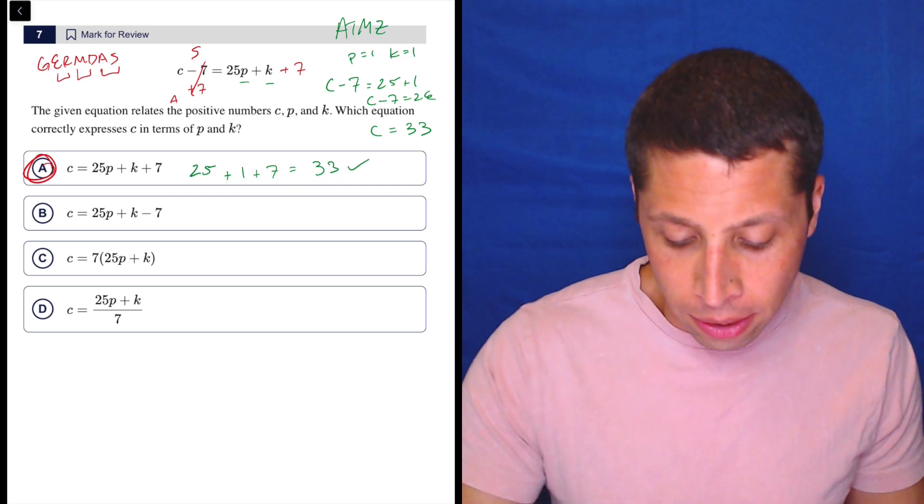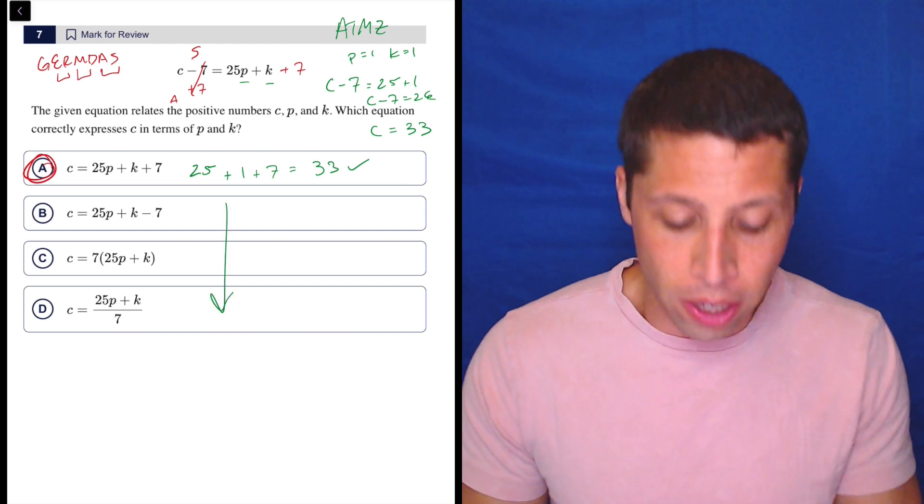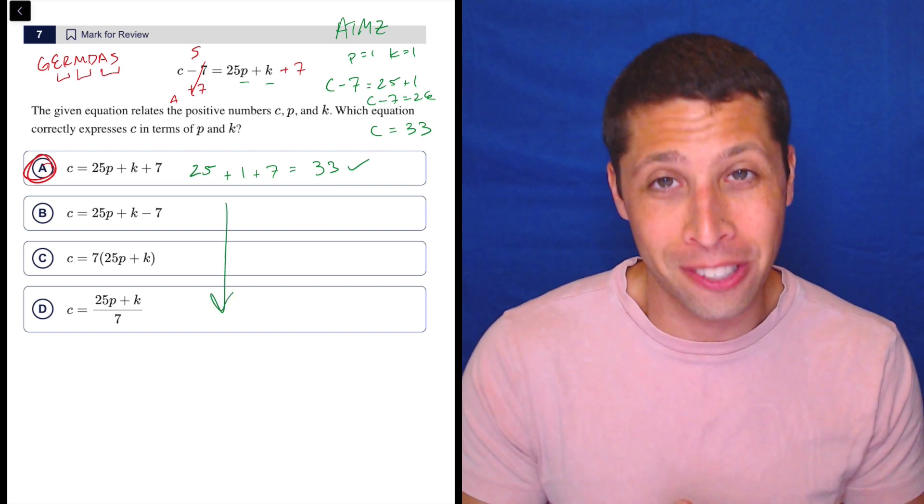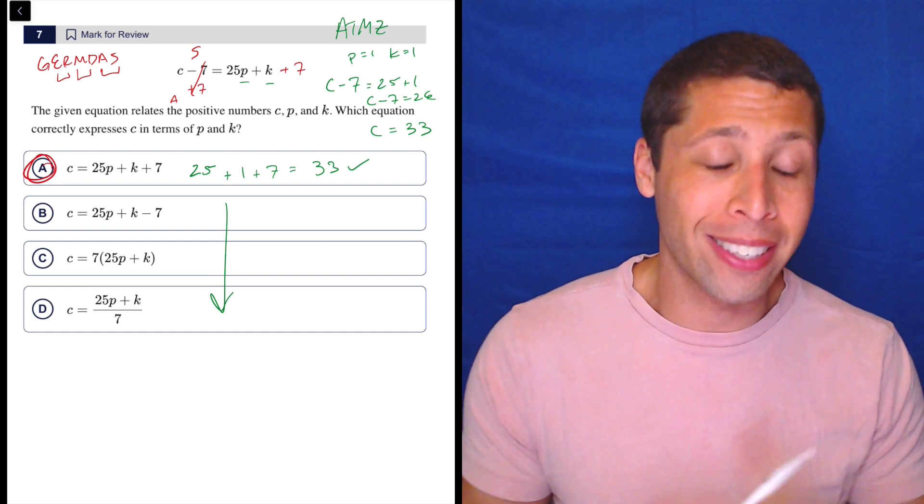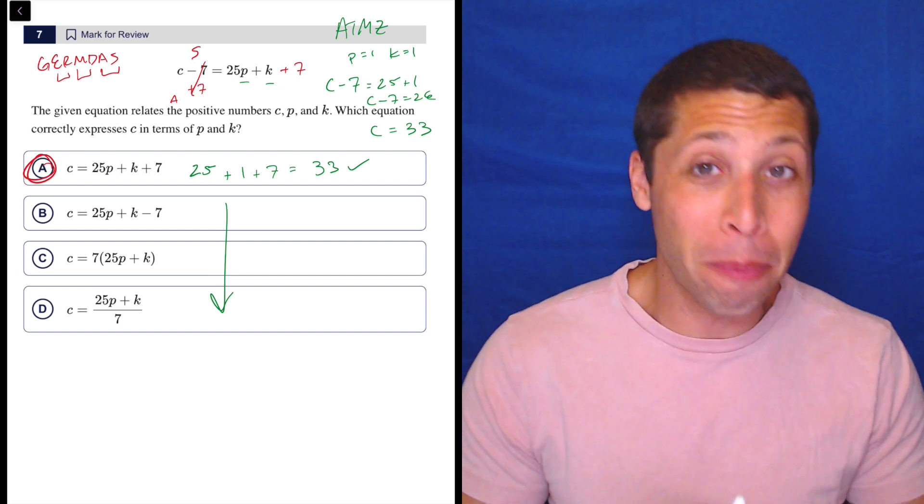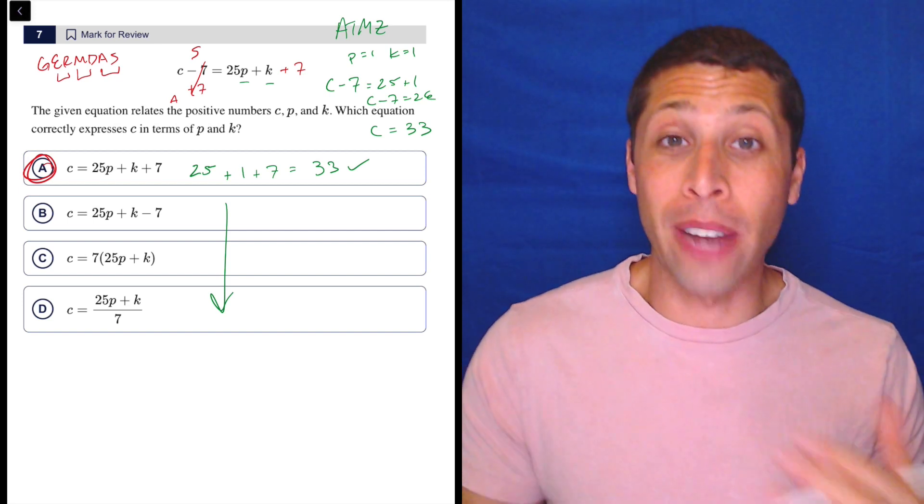We would need to try everything else. I'm not going to waste your time with it, but we would need to try all the other choices plugging in those numbers. If we get two answers that give us 33, the C value that we want, then we got to try a new number and change the P or change the K and try to narrow it down from there.